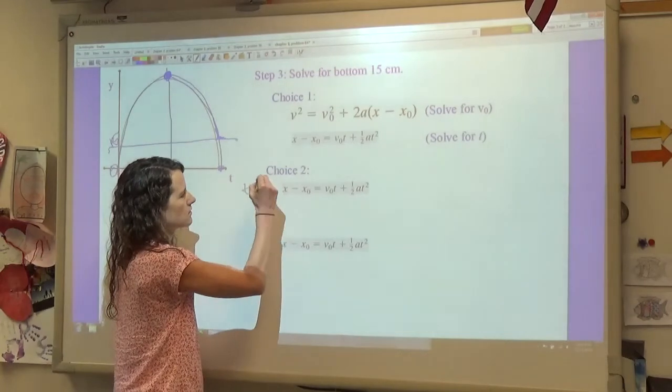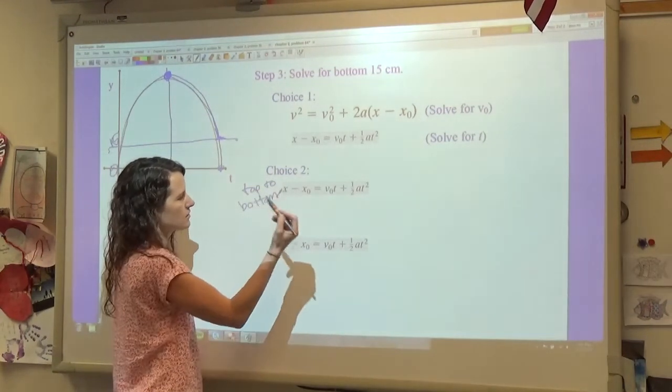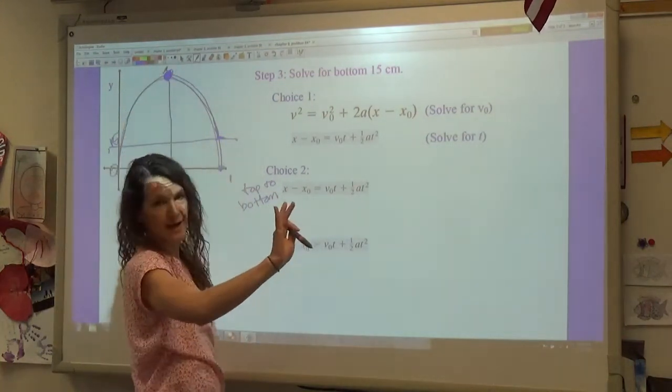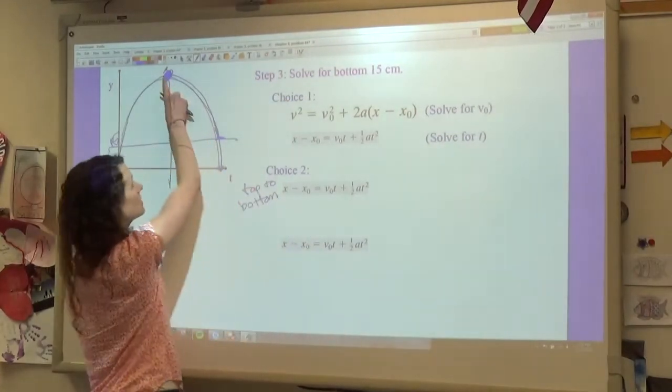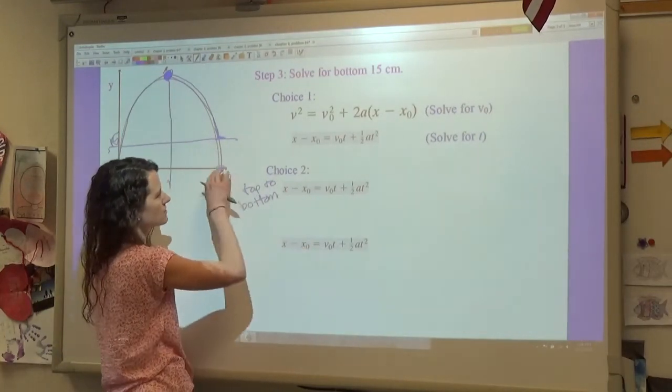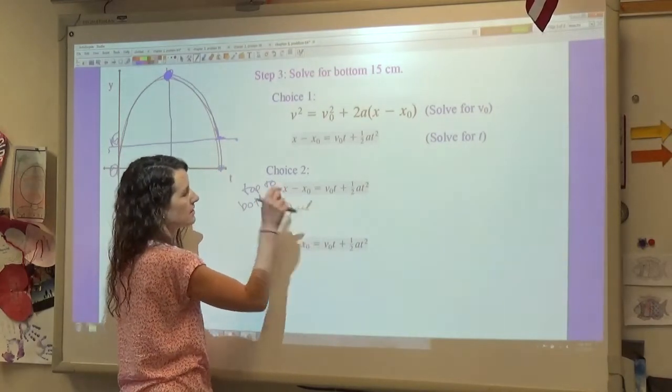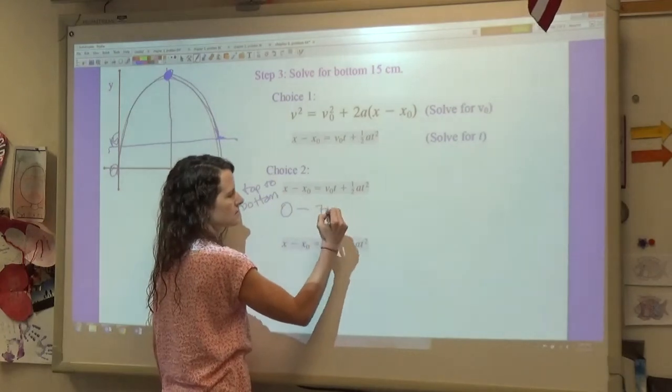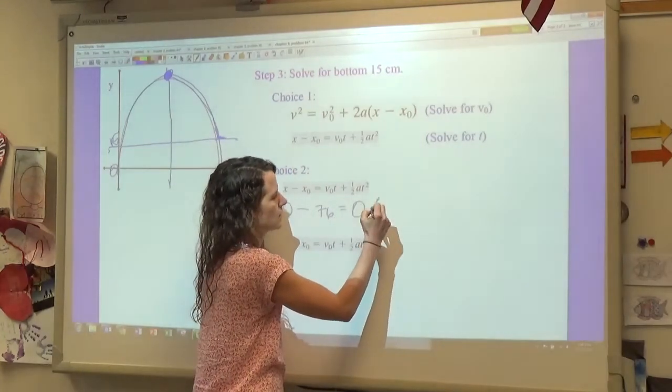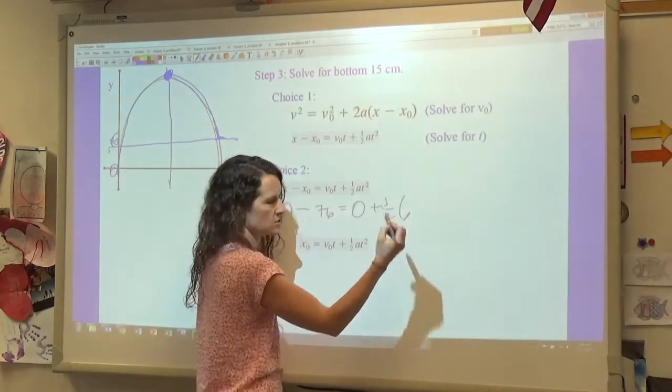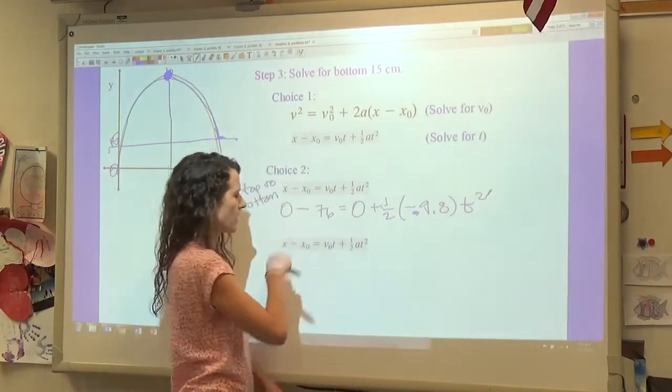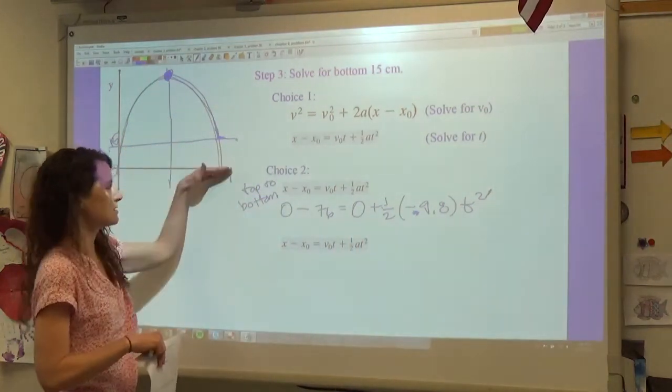So first, this is, let's call this from top to bottom. And so if that's the case, then again we're going to consider that this is our initial location. We're still just using half of our projectile motion so that we can use our information of it being a velocity of zero at the top. And so my final x is going to be zero right here at the bottom, my initial x is right here, so 0.76 meters. My initial velocity, since we're just talking about it from the top there, is going to be zero, and then plus 1/2, my acceleration is still negative 9.8 t squared.